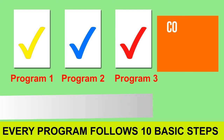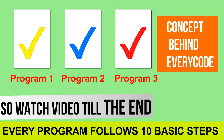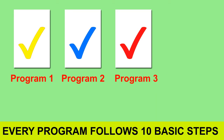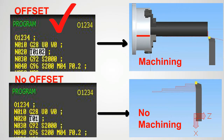In CNC programming, if you want to grow from basic to advanced level, you have to be very patient and try to know the concept behind every code, every block, and every value you put in to make a good program. We will learn how to take geometric offset in CNC turning and why we have to take it. First, I will show you what happens if we don't take the CNC offset.